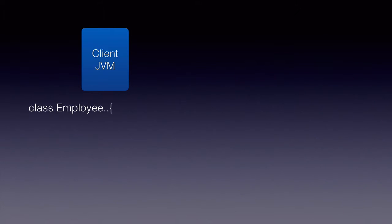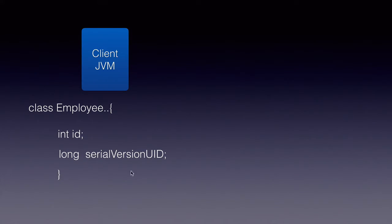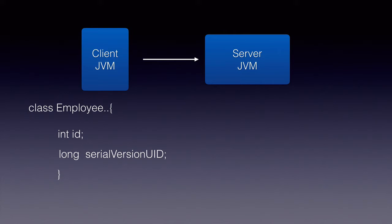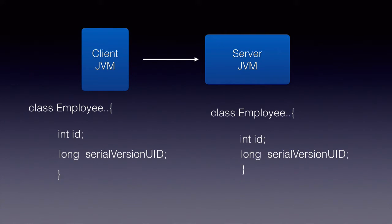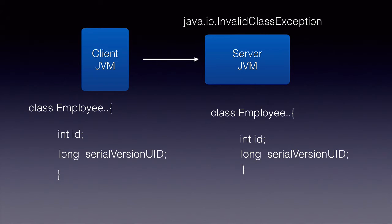Another scenario is where we have a client and server running. The client serializes an object — it has loaded the class, assigned a serial version UID, and sends the serialized object over the network to a server. The server JVM is a different JVM, and it has the same exact class, but its calculation of the serial version UID could be different. This could be a different JVM implementation altogether, so it can throw an InvalidClassException even though both classes are exactly the same.